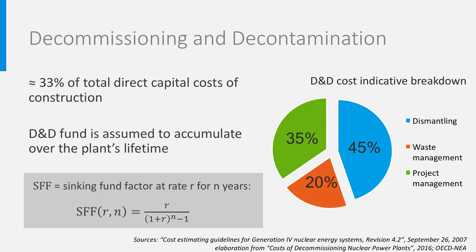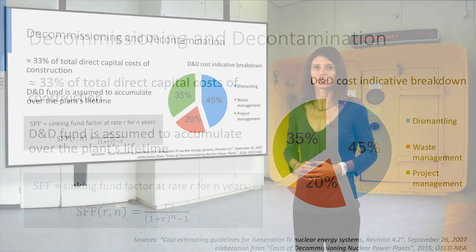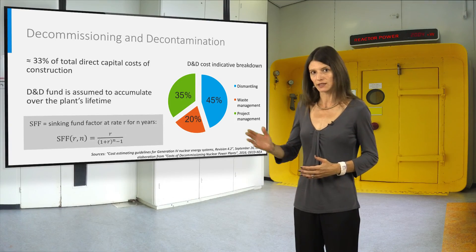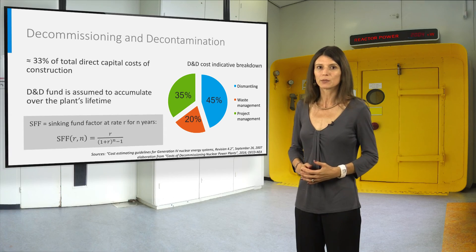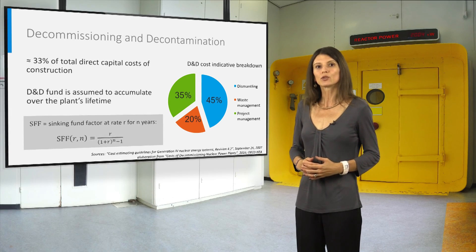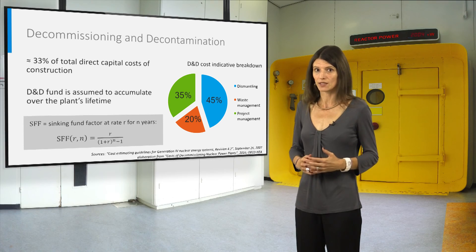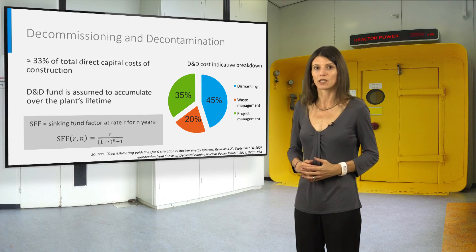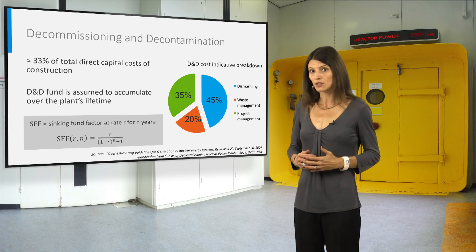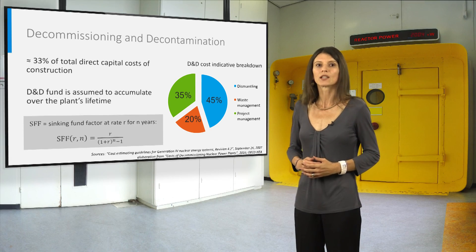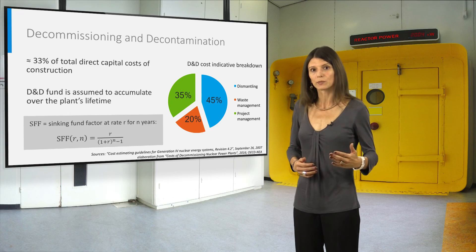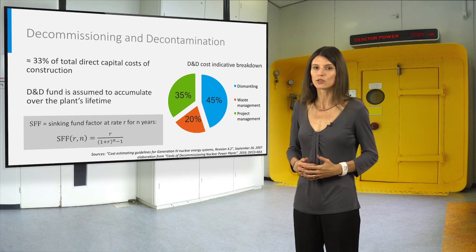Normally, a decommissioning and decontamination (D&D) sinking fund is established during the plant's operating lifetime, which can sometimes be invested in high-grade tax-free bonds to accumulate the necessary funds. The sinking fund formula indicated here can be used to calculate the annual payment to the D&D fund. At present, no universally accepted standard is established for developing decommissioning cost estimates, which vary depending on the D&D strategy, scope of activity, final state of the site, plant type, and so on. Due to the actualization effect on long-term expenses, the D&D component in the LCOE is negligible.